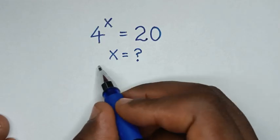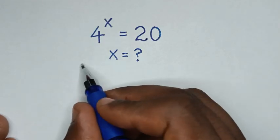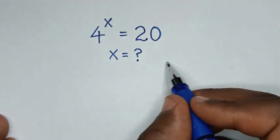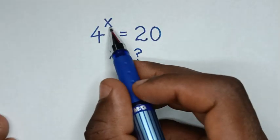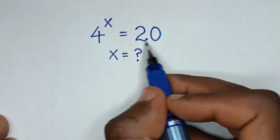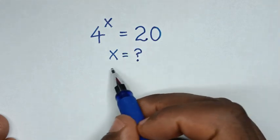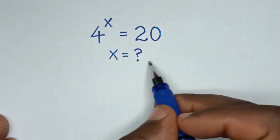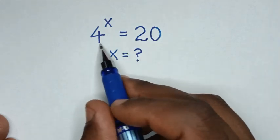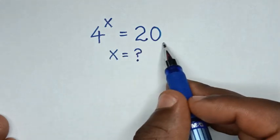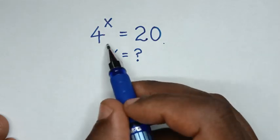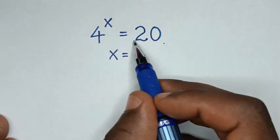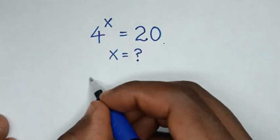Hello, you are welcome. We will solve this math problem: 4 to the power x is equal to 20, to find the value of x from this equation. In the first step, we'll apply log to both sides.